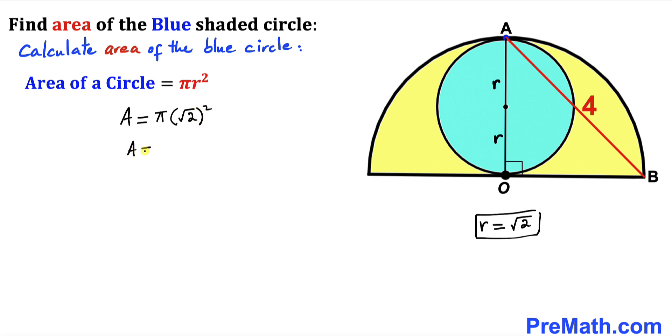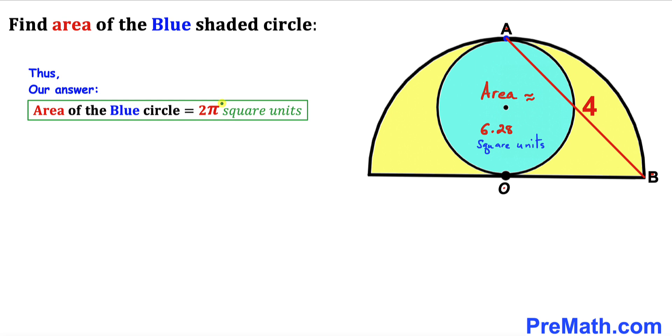So therefore area turns out to be 2π square units. So thus the area of this blue shaded circle turns out to be 2π square units.